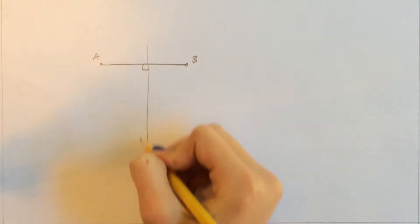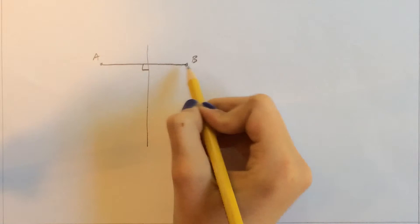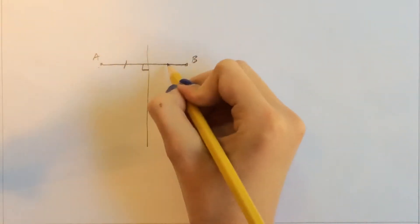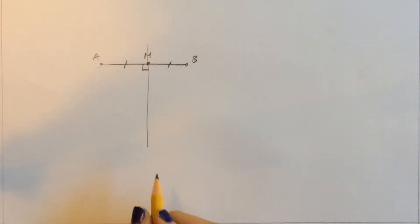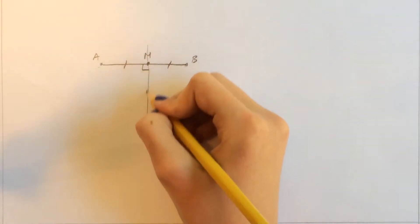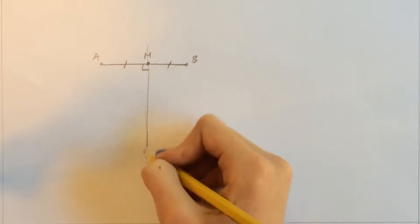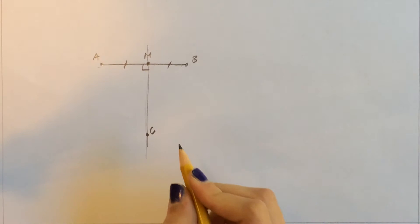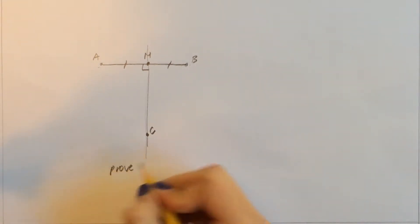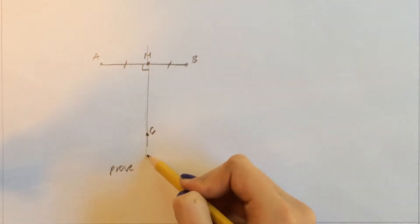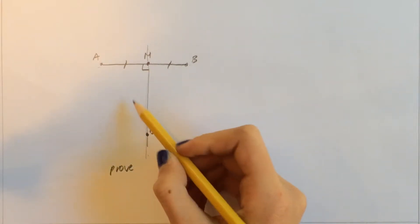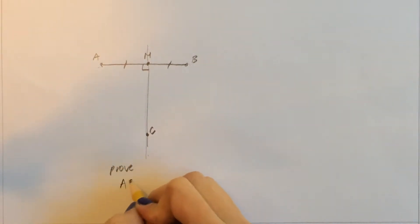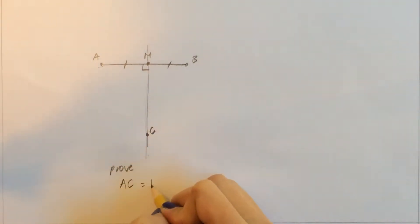So we know the perpendicular bisector is perpendicular, and it also bisects AB, which means that this side is equal to this side. Let's call this point M. And let's choose any point on this perpendicular bisector — let's call this point C. We want to prove that point C, which lies on the perpendicular bisector, is equidistant from A and B. So we want to prove that AC is equal to BC.